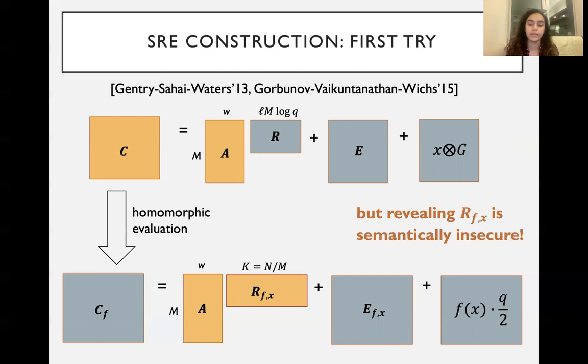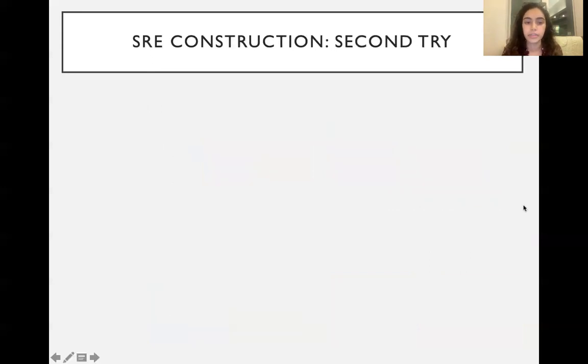However, revealing R_f(x) is semantically insecure. Just to clarify, in this picture what we see in orange are the things that are released publicly and what we see in blue are the things that are either computed by the person who's trying to evaluate the circuit or they're not given at all, and they're just kind of implicit in the construction. So this is basically the issue with our first try. We have succinctness here. We managed to get succinctness basically by the fact that C will be much smaller than C_f. However, revealing R_f(x) is not actually going to give us security.